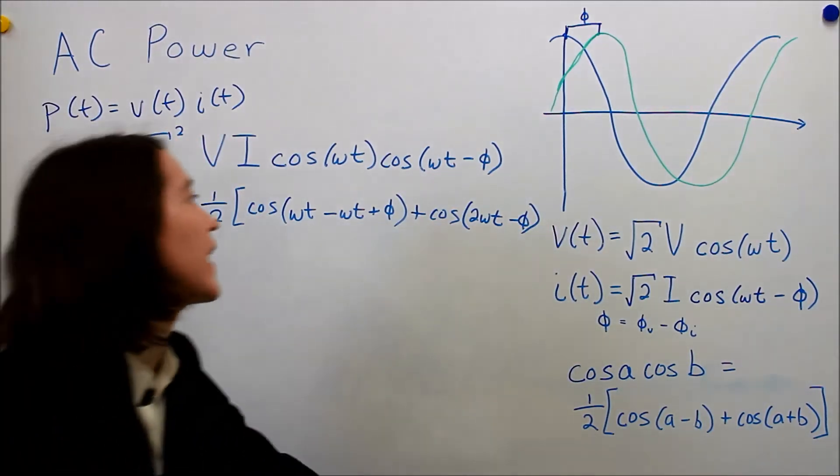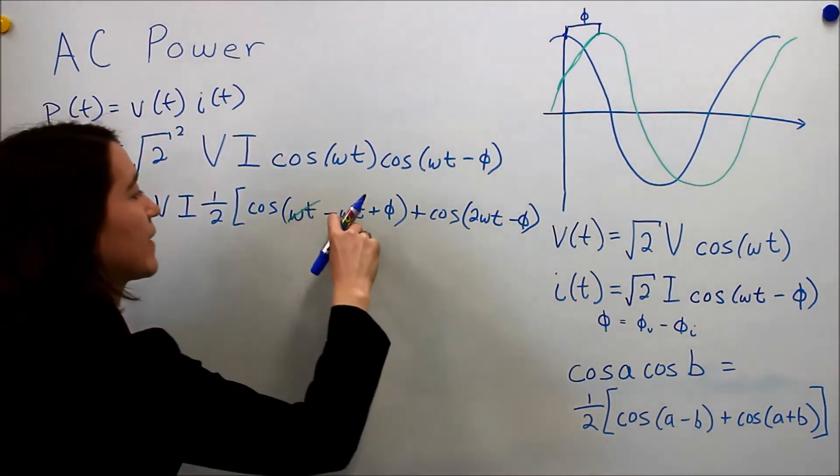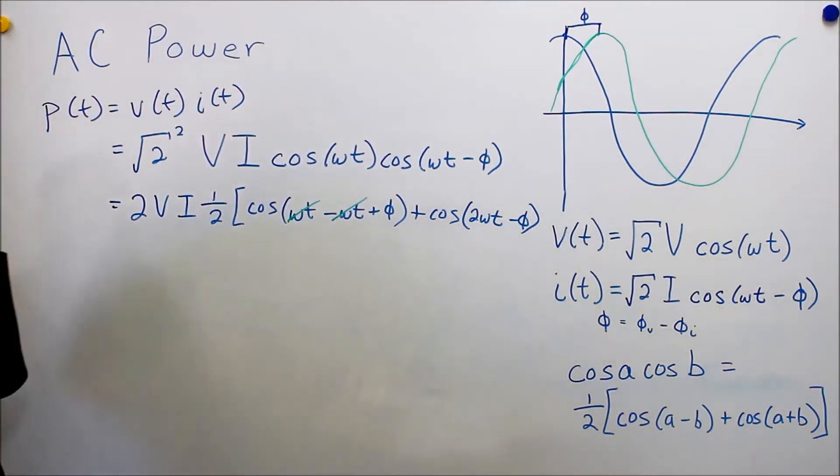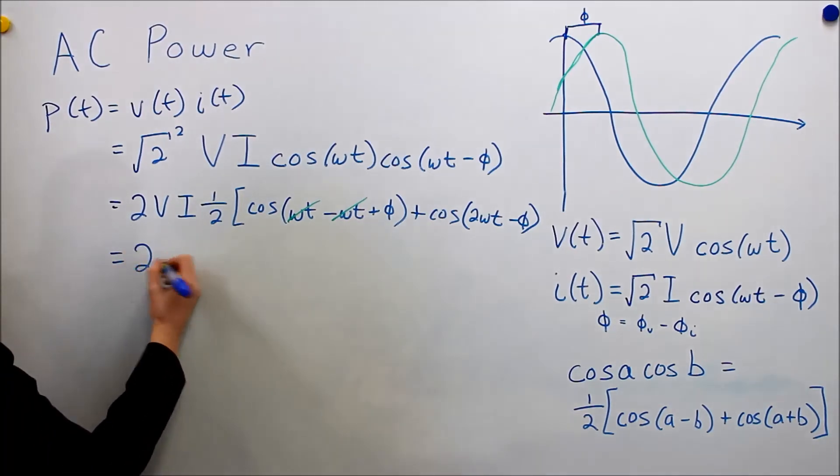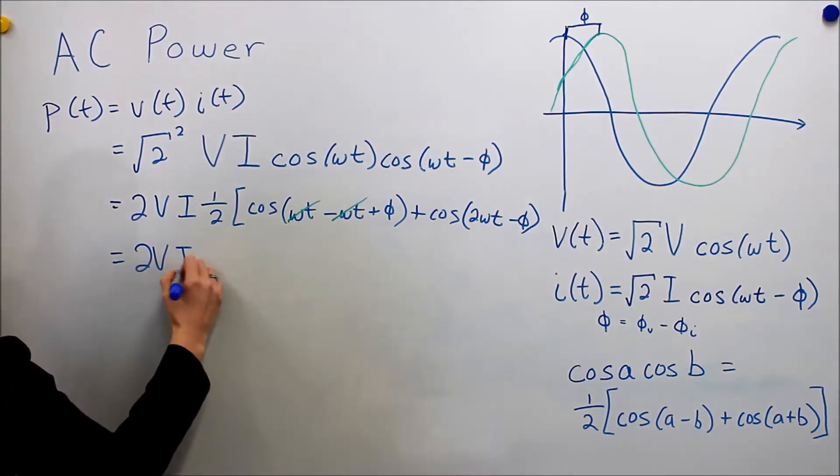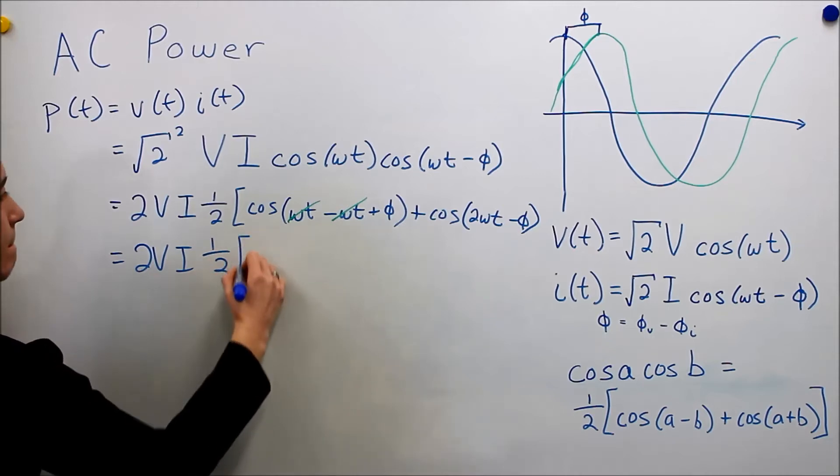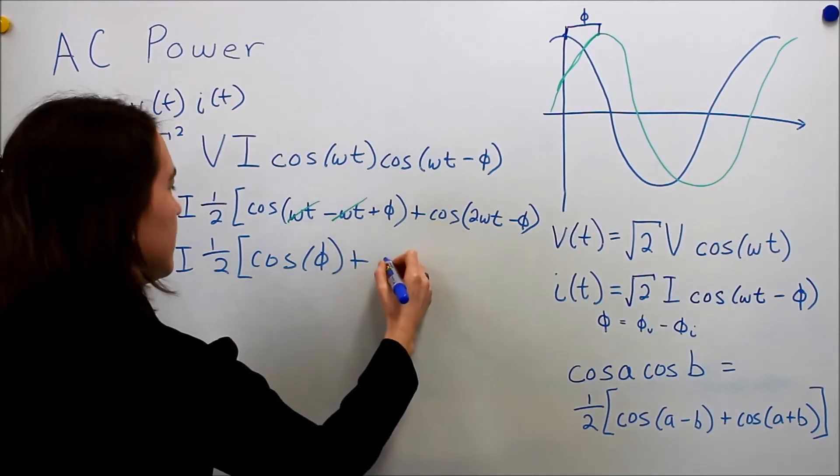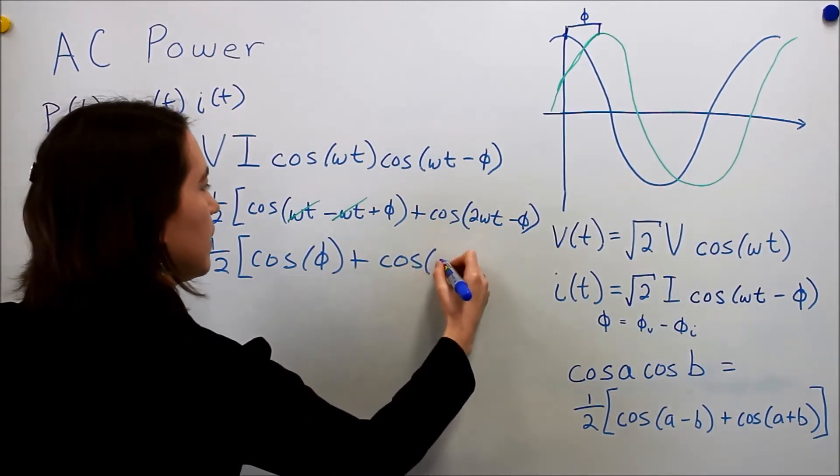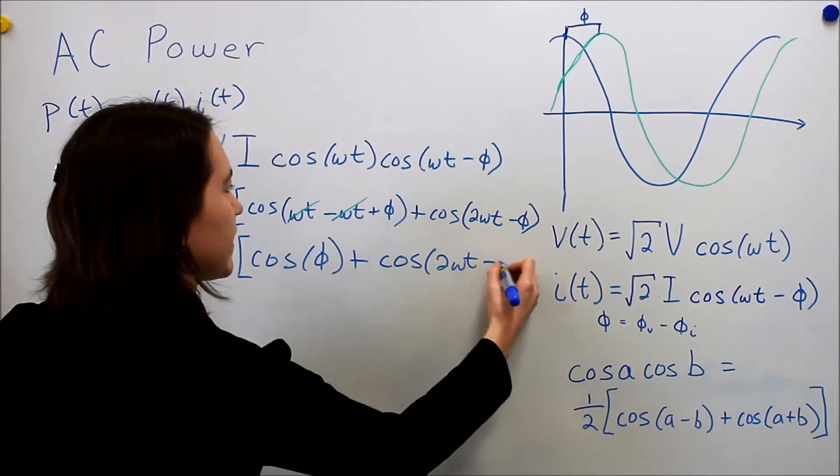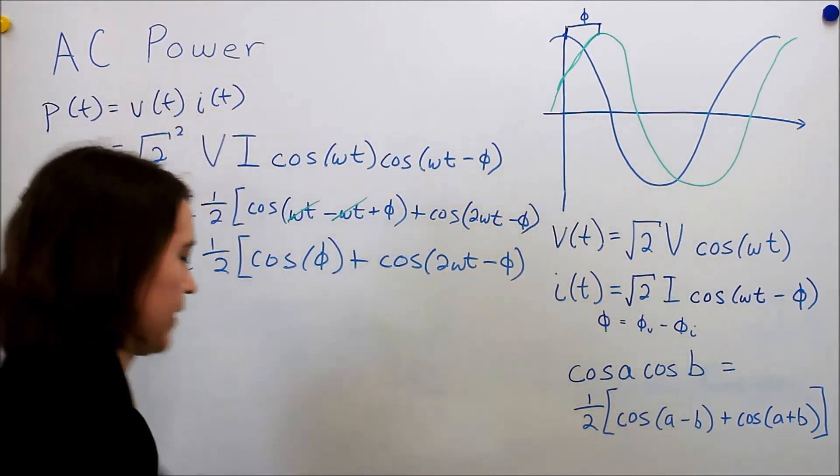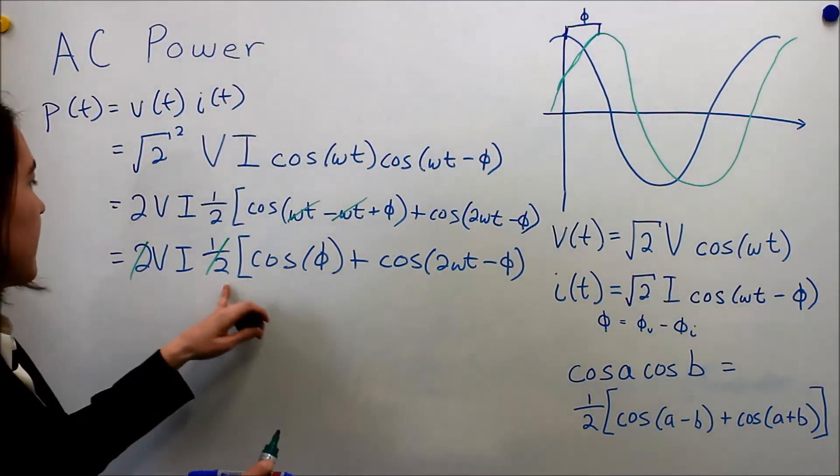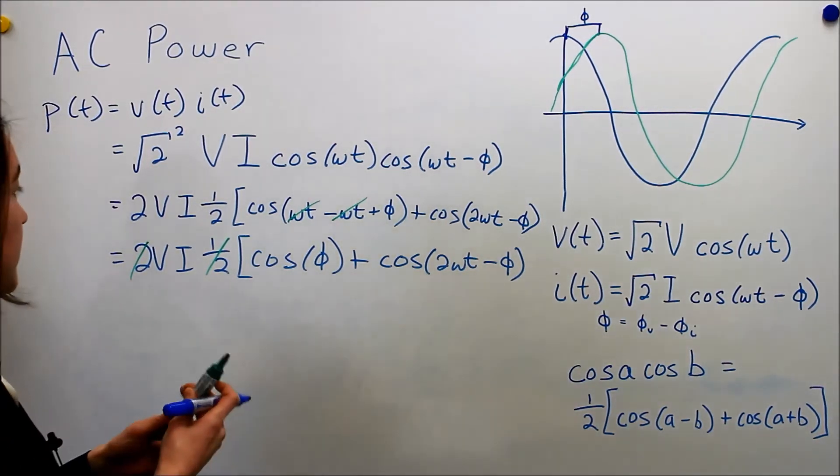Okay, we'll notice that these will cancel out with each other. So we will be left with this. Cosine of phi plus cosine of 2 omega t minus phi. And I, of course, forgot to cancel these out. But we see that we are going to be left with just the RMS values here.